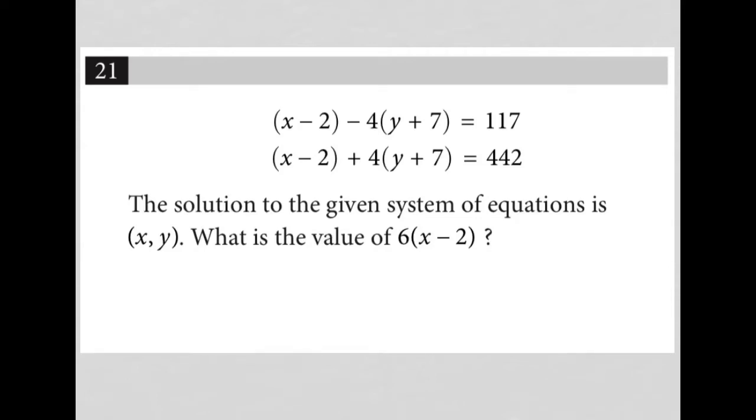So this question has a system of equations. We have the first equation and the second equation, which pretty much look the same on the left-hand side, except for the second equation has a positive sign where the first equation has a minus sign. Then of course our actual values on the right-hand side are different. So the question says the solution to the given system of equations is x comma y. What is the value of 6 times x minus 2?